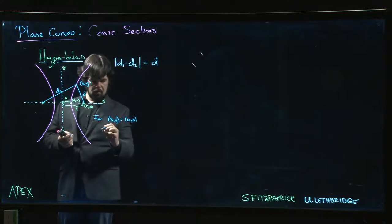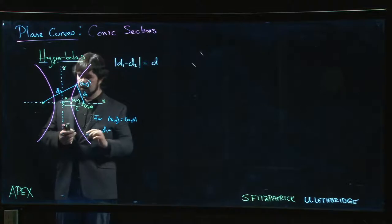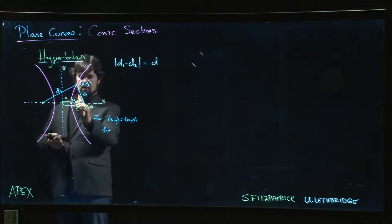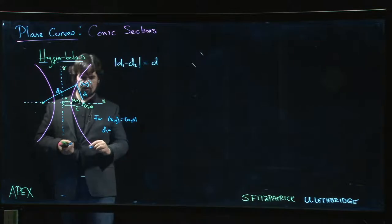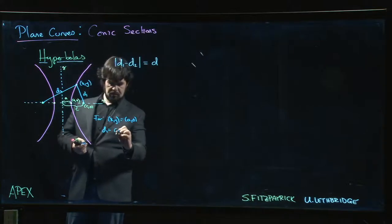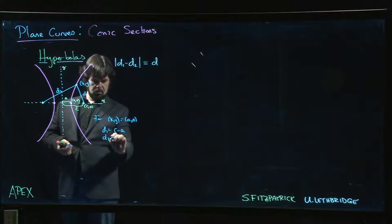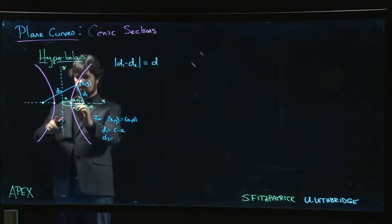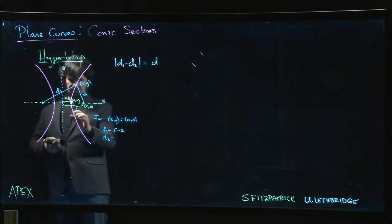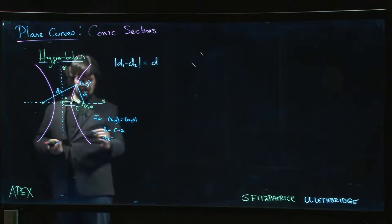We get d1—well d1 is just going to be the distance from here to there, so d1 is going to be c minus a. d2 is the distance from there to the other focus, which is going to be c plus a.